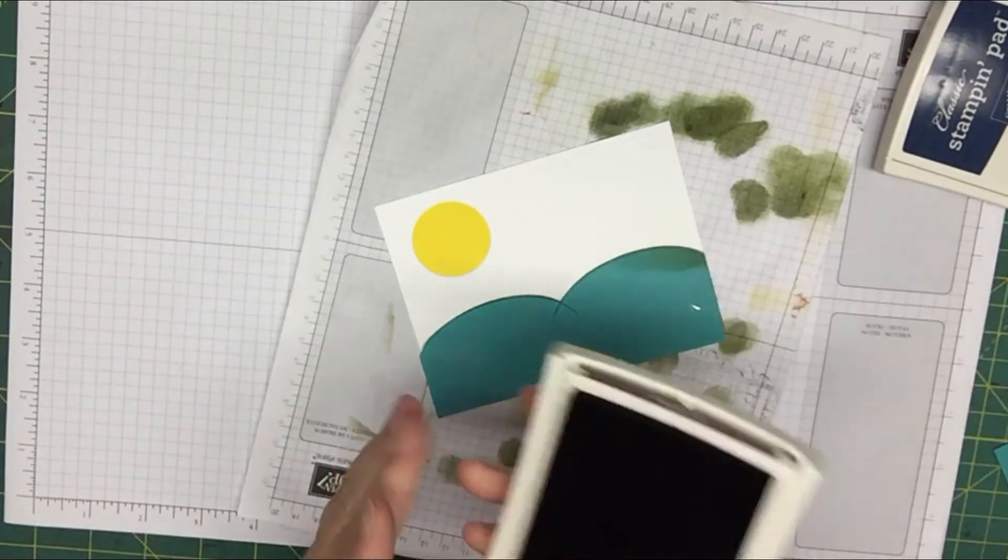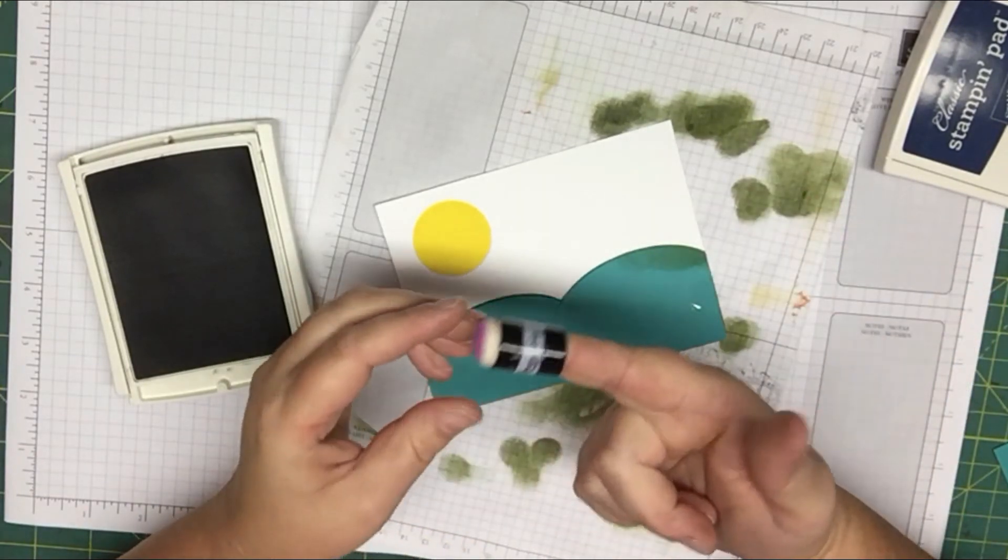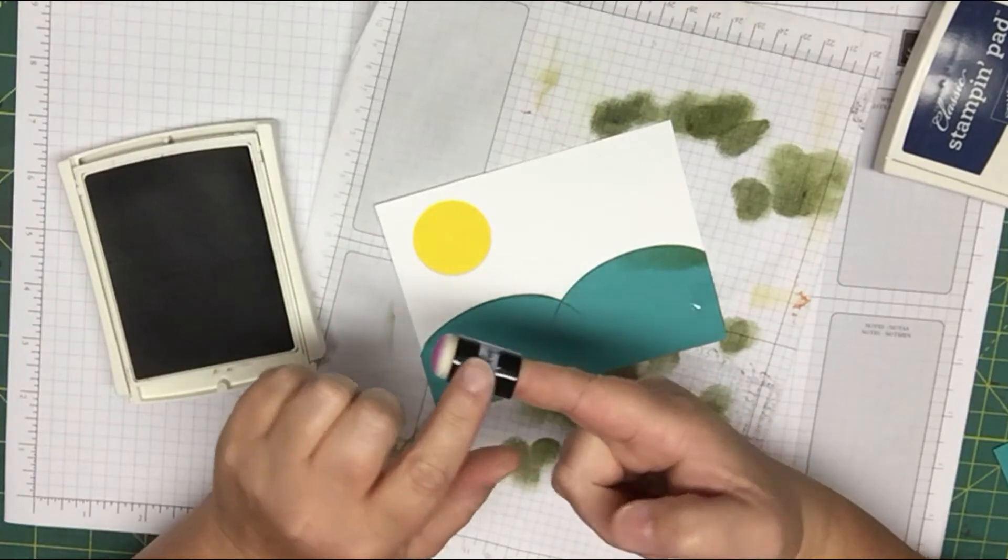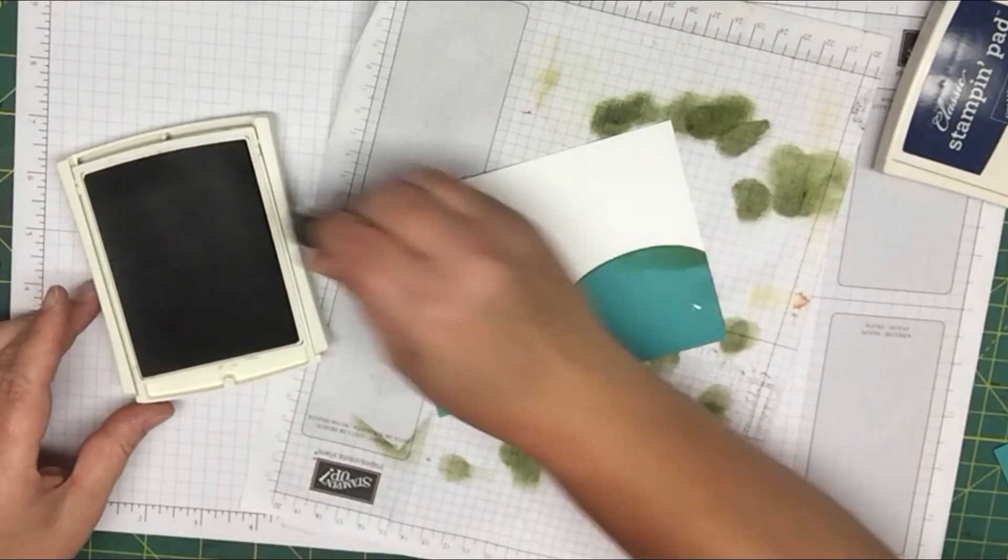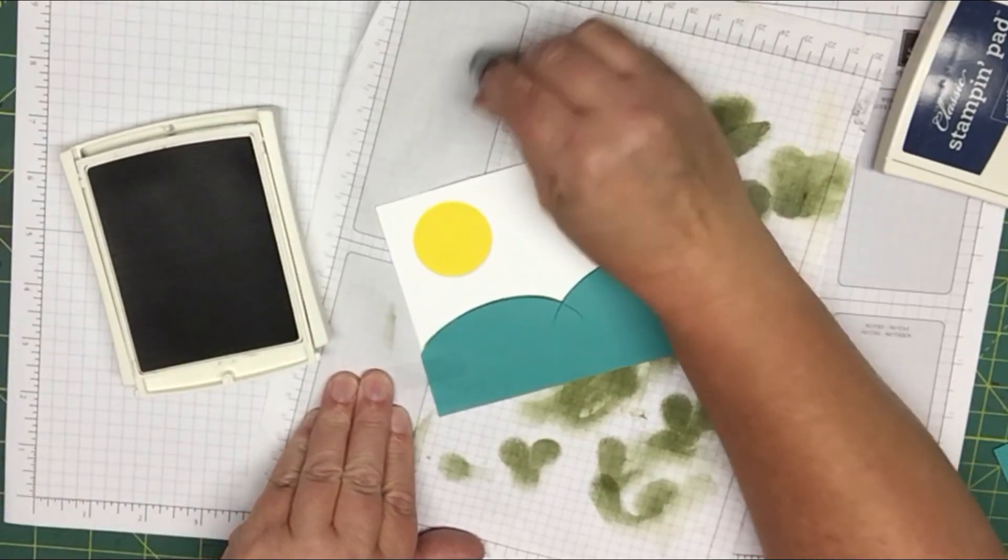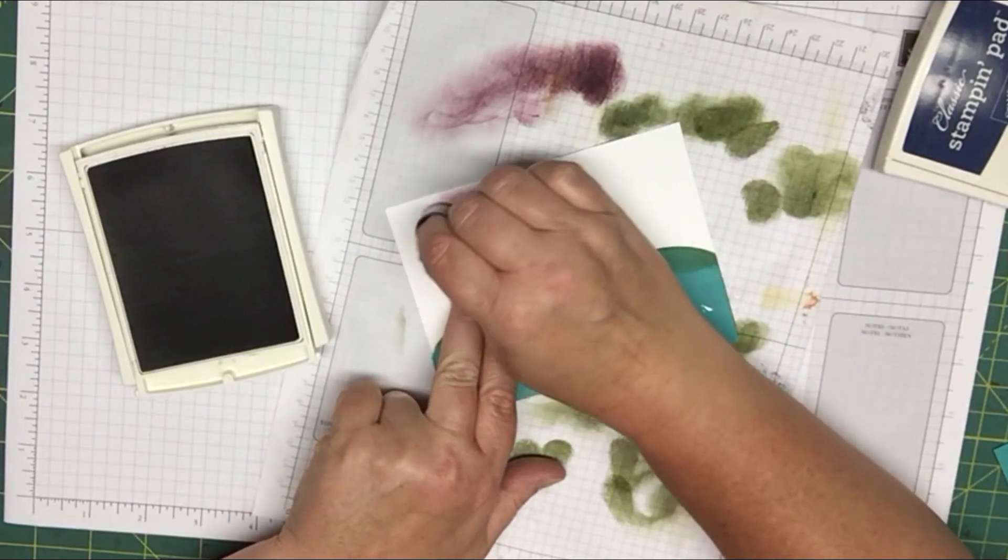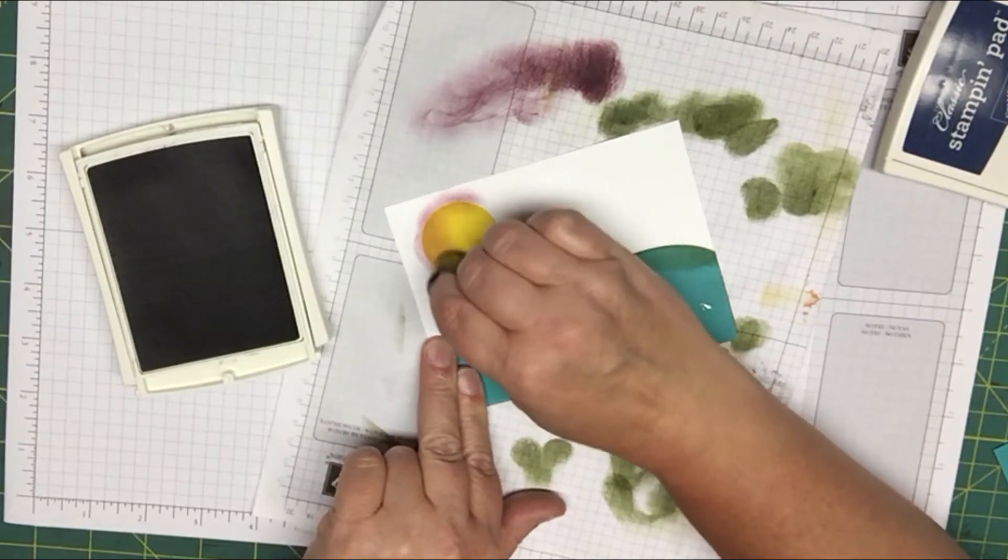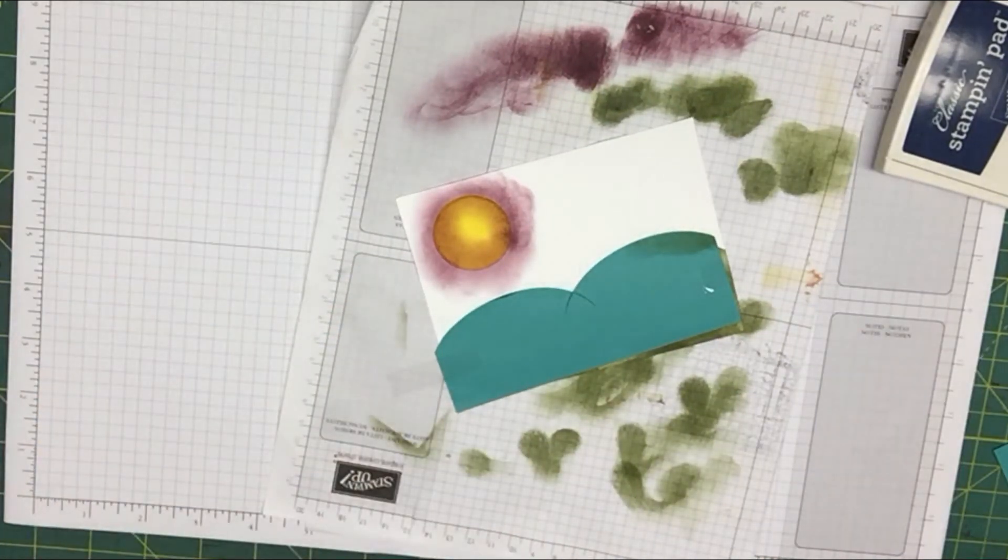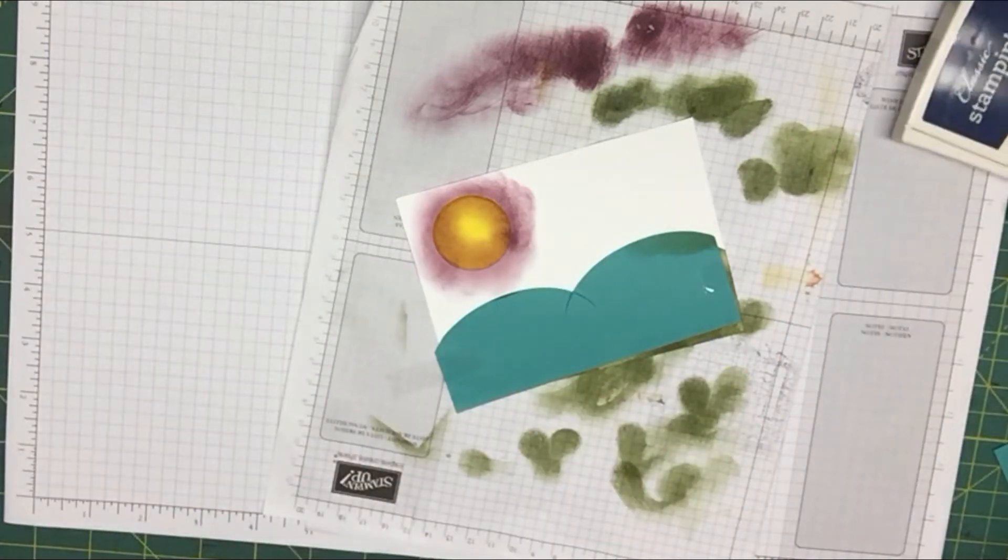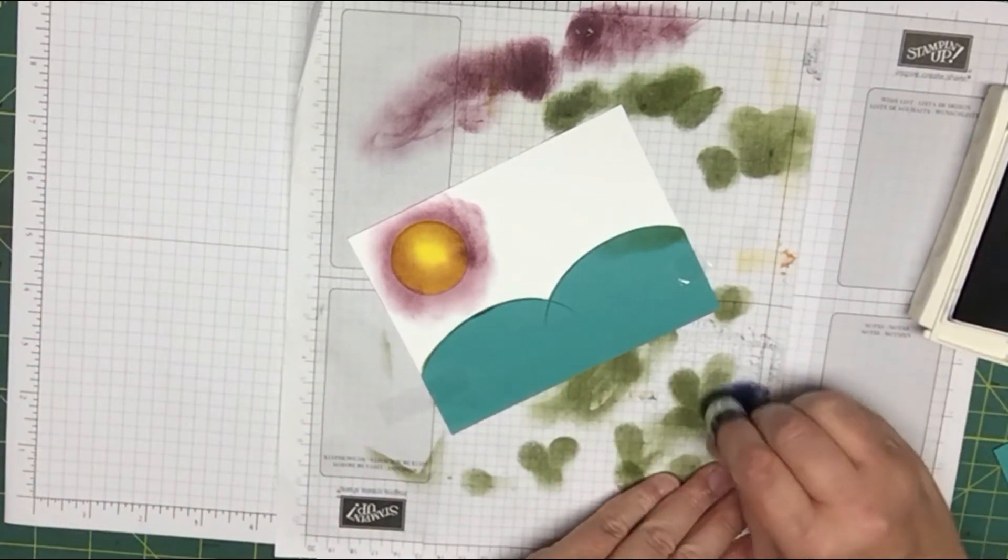So then the next colors you're going to use is going to be Night of Navy and Fresh Fig. So you're going to take your Fresh Fig and again another sponge dauber. And I take my daubers and I label them the color with just a piece of regular paper, and I just put some tape over them, and then I'll use this for the same color all the time. So you're just going to go ahead and you want to definitely go off the paper first with this. Get it nice and light, and then just work little circular motions around your moon.